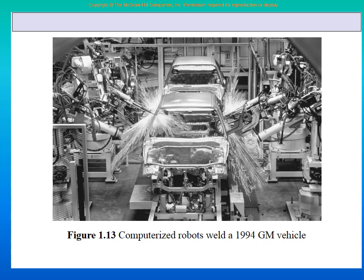Here we are showing you a much bigger thing — a General Motors factory. Even in 1994, a lot of precision welding was done by robots. These are completely electronically controlled, with no human beings inside. All the materials, engineering, and manufacturing is carried out by robots.